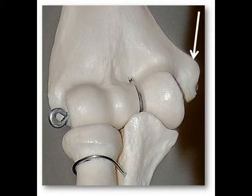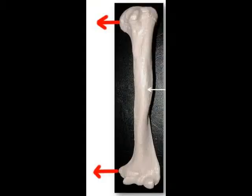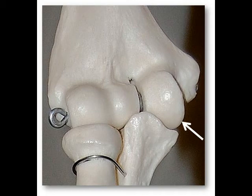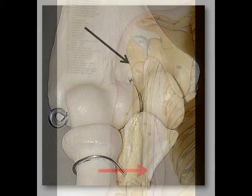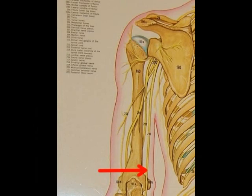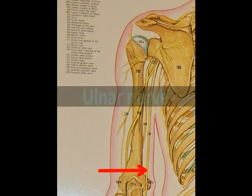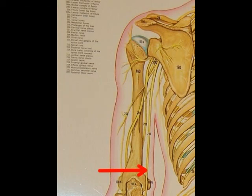Notice how the distal end of the humerus looks like a hitchhiker's hand. The thumb on this hand is the medial epicondyle, and notice the thumb points medially just like the head of the humerus. The first two fingers next to the thumb are the trochlea. The last two fingers are the capitulum, and the depression in the middle of the palm is the coronoid fossa. Another area you can palpate is the region right above the posterior surface of the medial epicondyle — this is the ulnar nerve, which causes you to feel a sharp pain when you hit your elbow, also known as your funny bone.